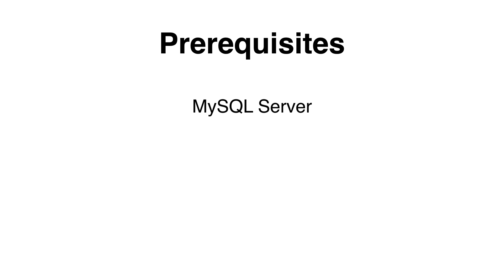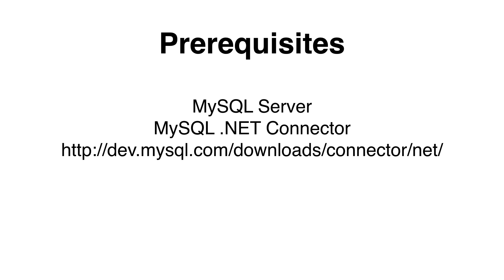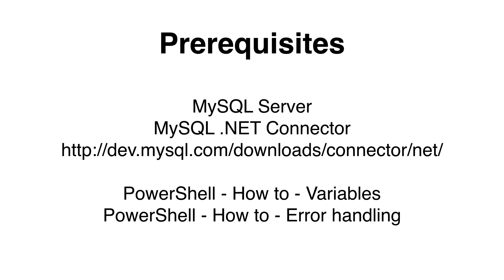Before I start, I need to make sure that you have the following. You need a MySQL server with credentials that allow you to access the server. You will have to install the mysql.net connector. You will need to have a full understanding on how to work with variables and how to handle errors in Windows PowerShell. If you are unsure, please view one of my earlier sessions.